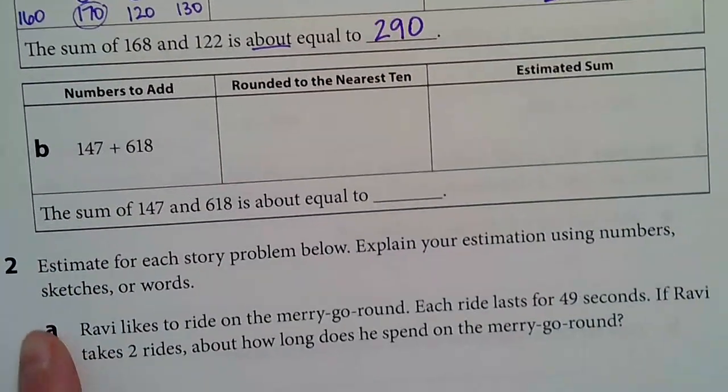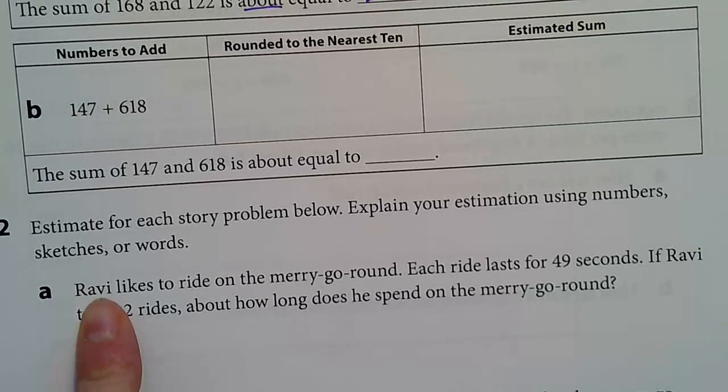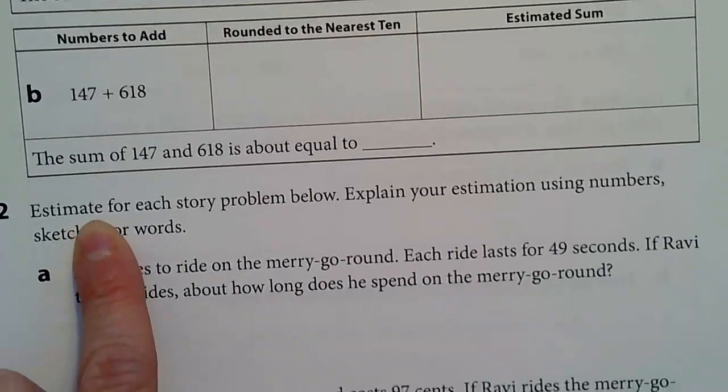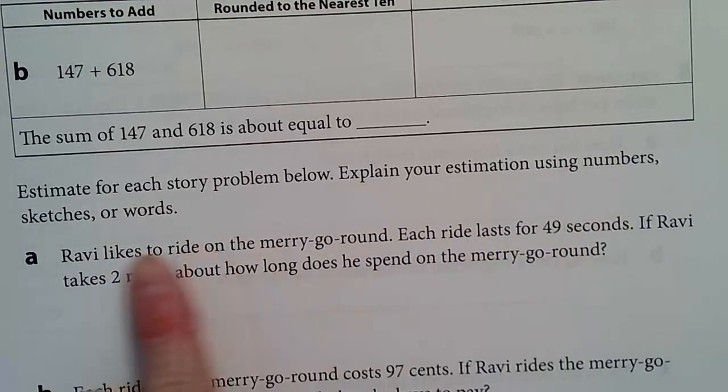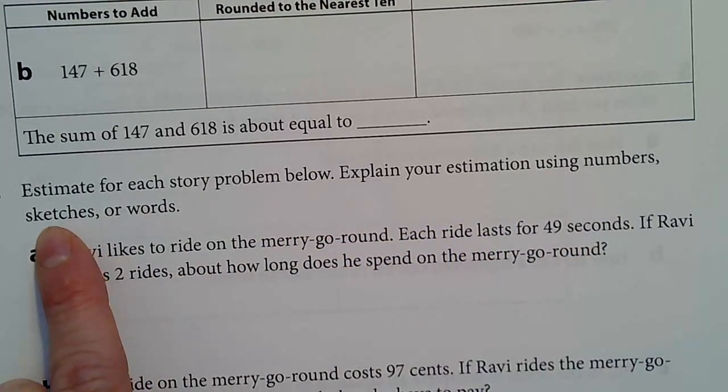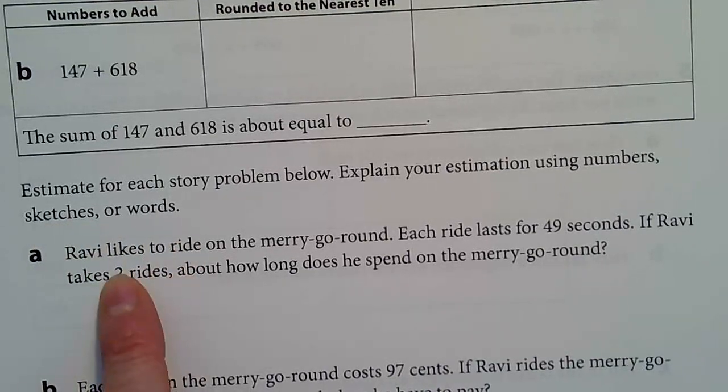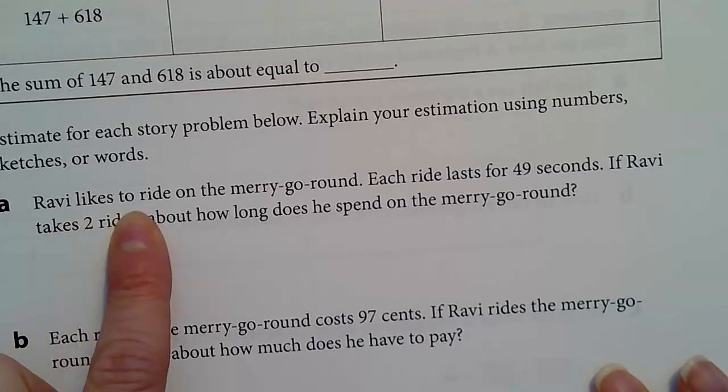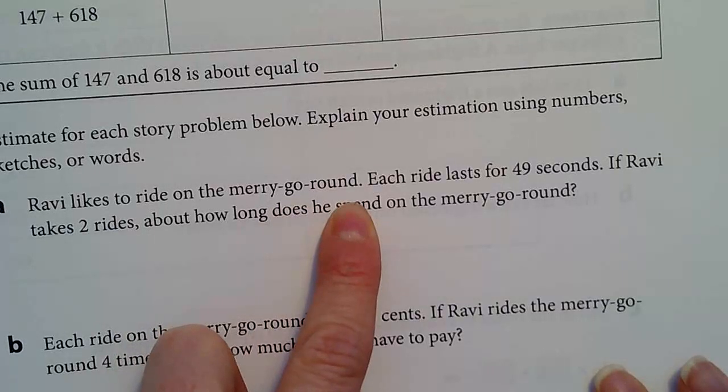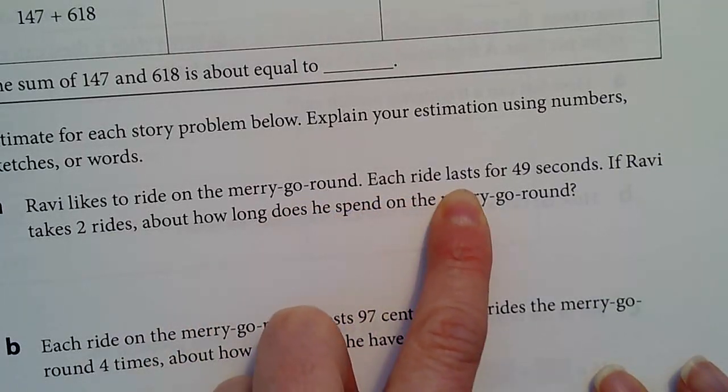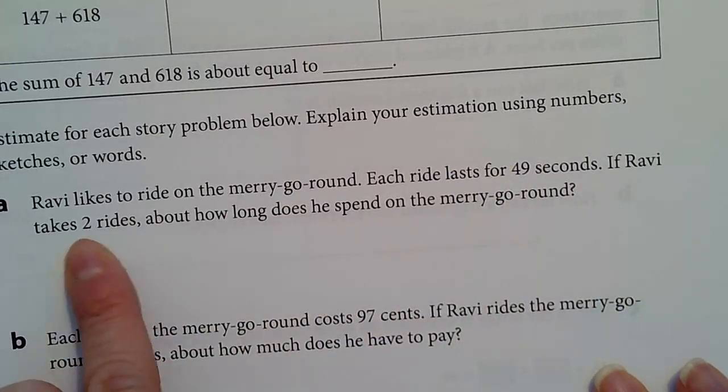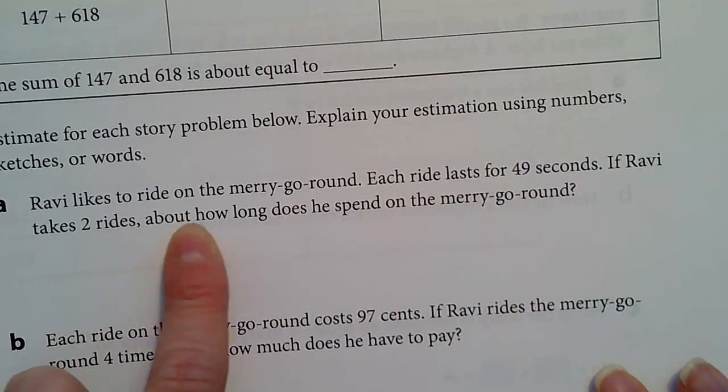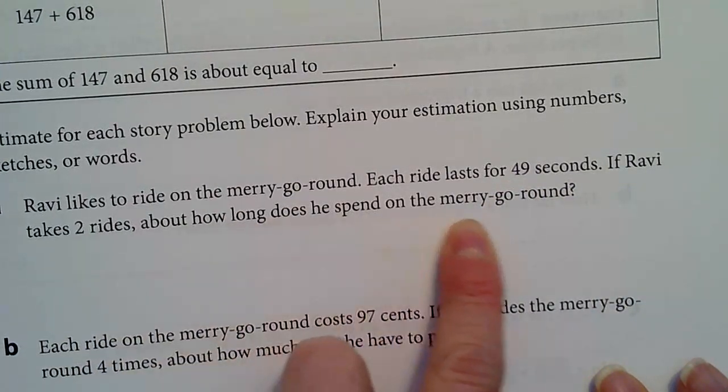Number two is a story problem. It says estimate for each story problem below. Explain your estimation using numbers, sketches, which are pictures, or words. Ravi likes to ride on the merry-go-round. Each ride lasts for 49 seconds. If Ravi takes two rides, about how long does he spend on the merry-go-round?